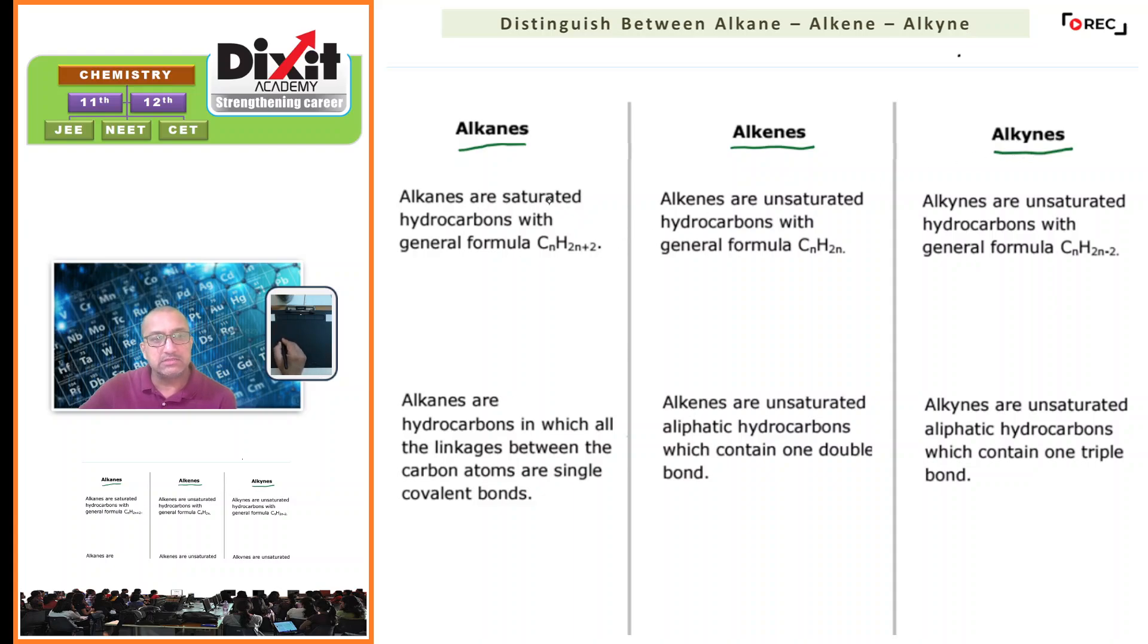Alkanes are saturated hydrocarbons with general formula CnH2n+2. So what is the general formula for alkane? CnH2n+2, where n indicates the number of carbon atoms.